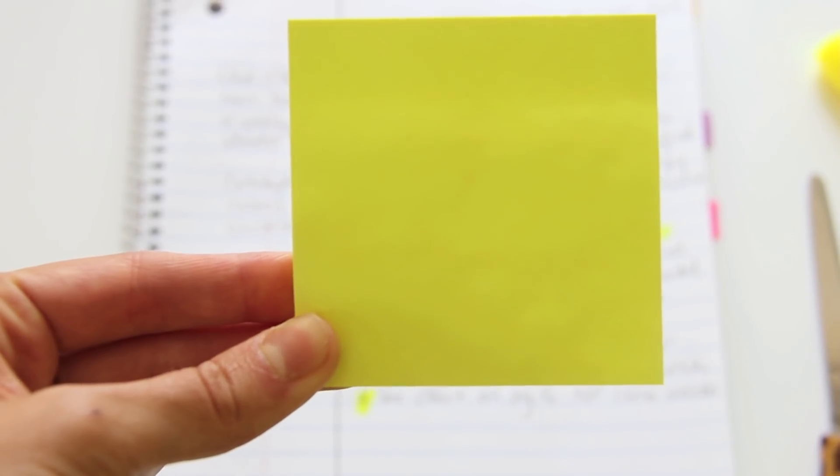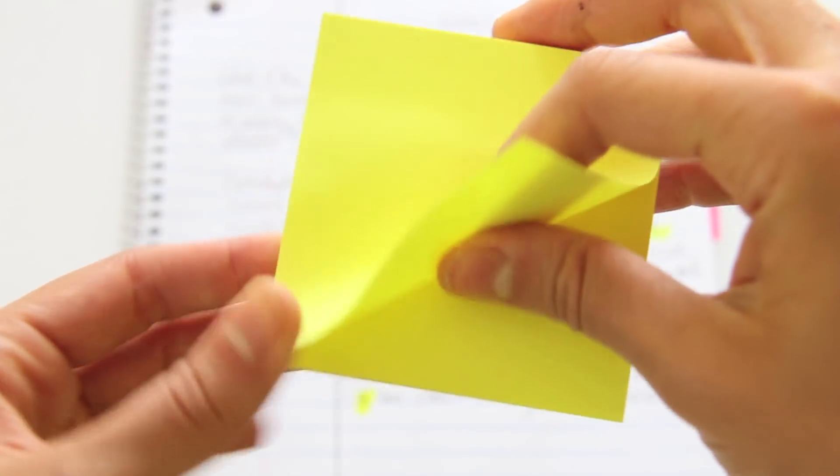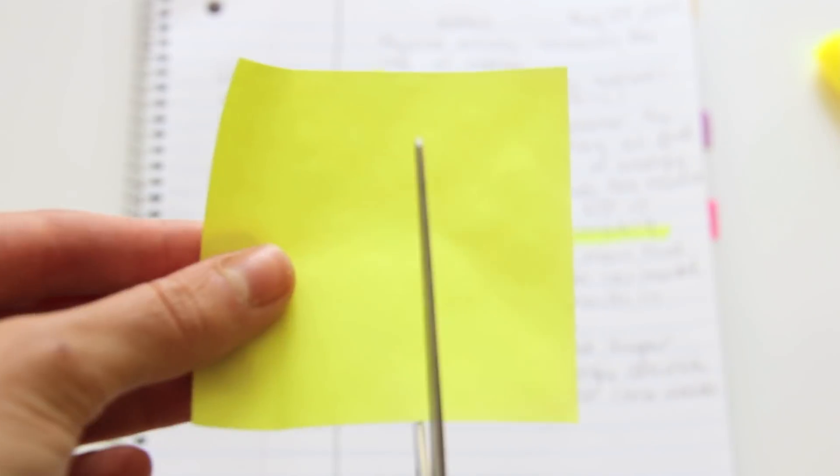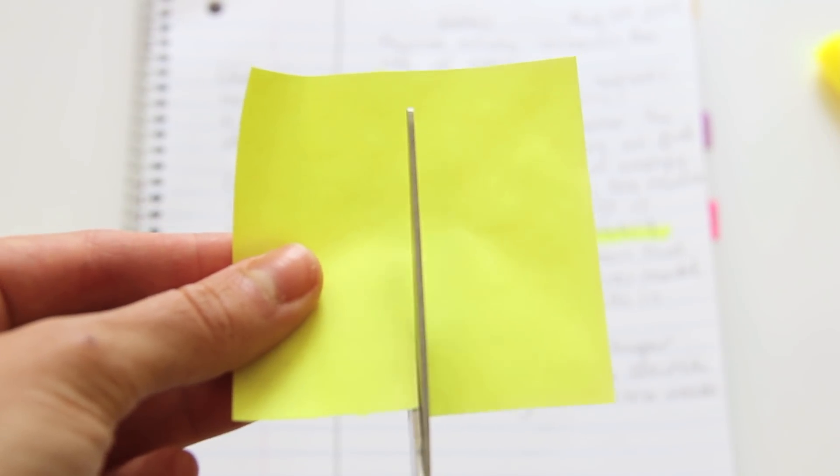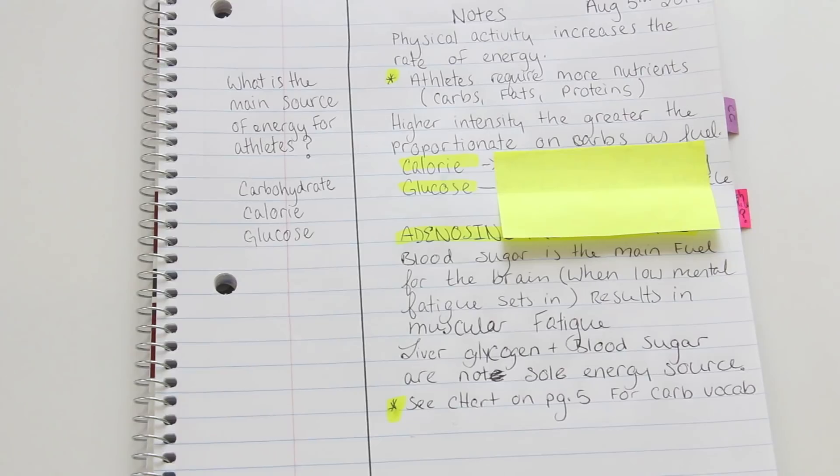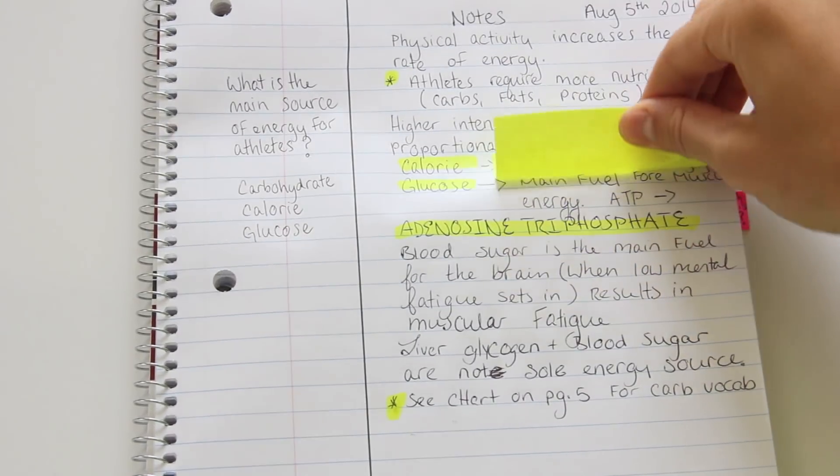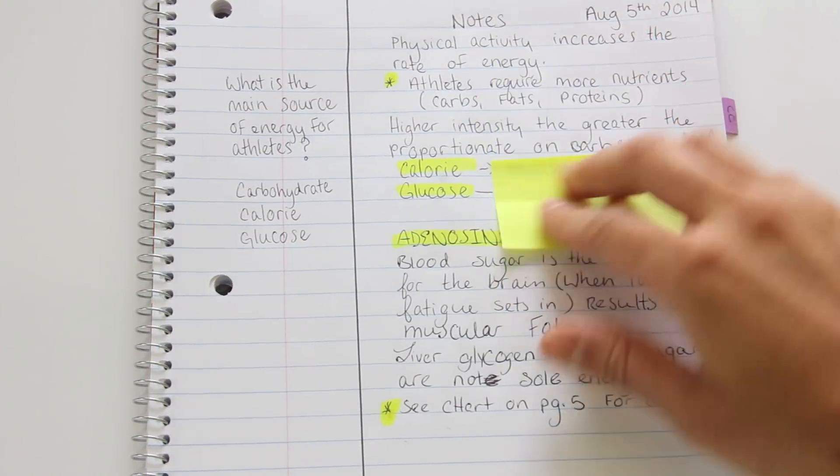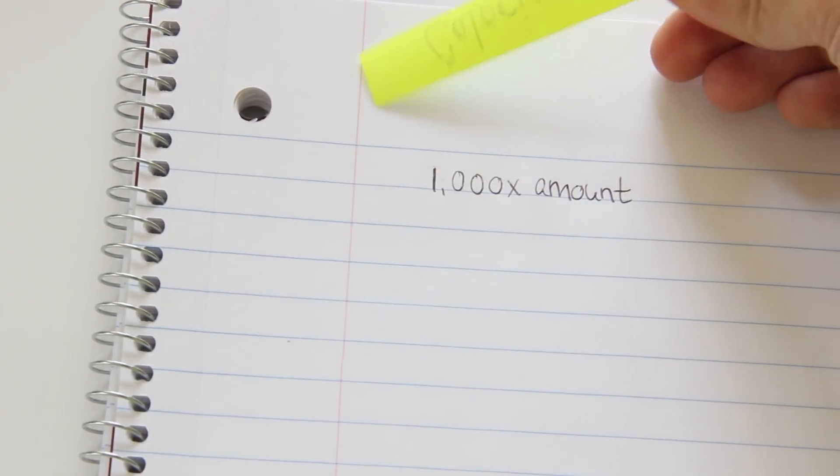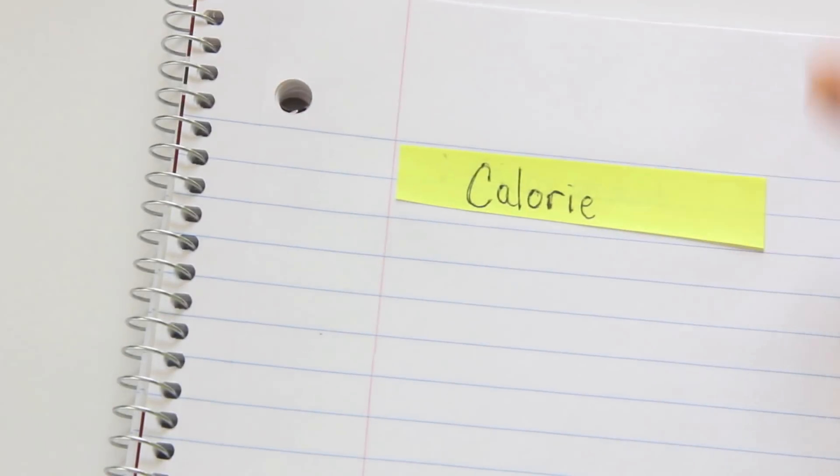Here I have a post-it note that I am just going to use as a cover. I'm going to cut this in half and use it to cover up definitions from important words that I have in my notes. So that way when I'm studying, I don't see them and it can help me to recite things out loud and help me retain the information better.